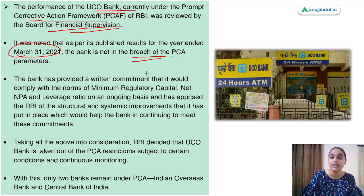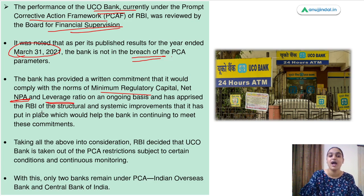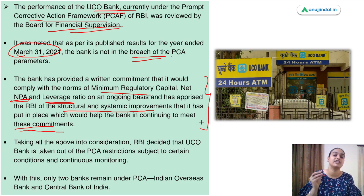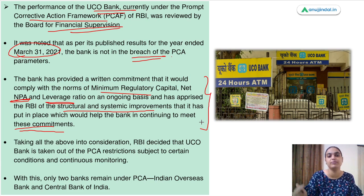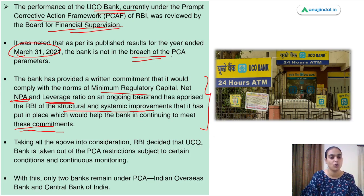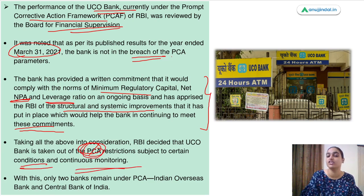The bank provided a written commitment that it would comply with the norms of minimum regulatory capital, NPA ratios, and the leverage ratio, and has apprised RBI of the structural and systemic improvements it will follow to meet its commitments. UCO Bank made commitments to RBI regarding capital ratio, NPA ratio, and leverage ratio, and made improvements in its functioning. Taking all this into consideration, RBI decided to take UCO Bank out of the PCA restrictions, subject to some conditions and continuous monitoring.